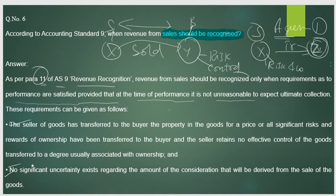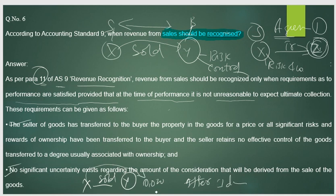No significant uncertainty means: once goods are sold — for example, X sold goods to Y for 10 thousand rupees — X cannot come back and ask for 11 thousand. The price is fixed at 10 thousand. There is no further requirement for any additional consideration once the sale is made.